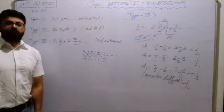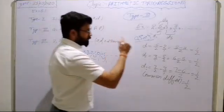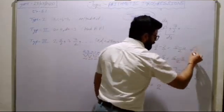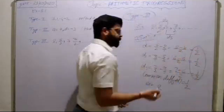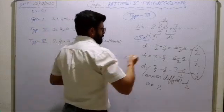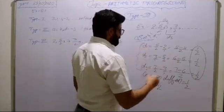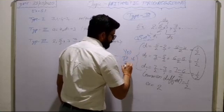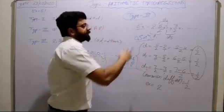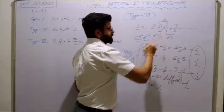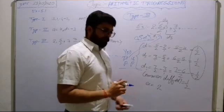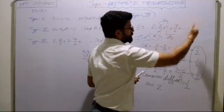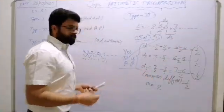The common difference d is equal to 1/2, and the first term a is equal to 2. Since all differences between successive terms are equal to 1/2, this sequence is an AP. Now we need to find further terms. To find the fifth term: take the fourth term 7/2 and add the common difference 1/2, which gives 8/2 equals 4, so the fifth term is 4.